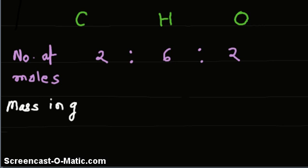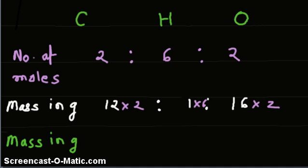Multiplying the number of moles by atomic mass: atomic mass of carbon is 12, atomic mass of hydrogen is 1, and atomic mass of oxygen is 16. Now, multiply this by the number of moles already written. So, times 2, times 6, and times 2. We get the mass in grams of each: 24 grams to 6 grams to 32 grams.